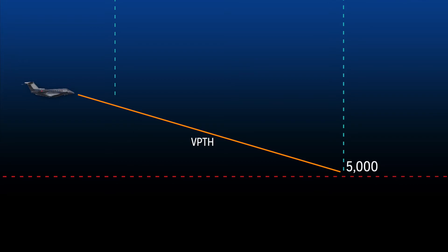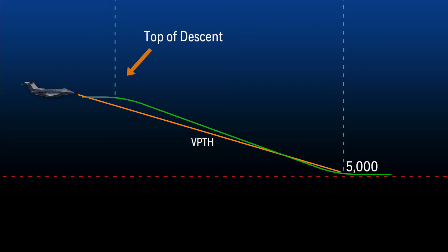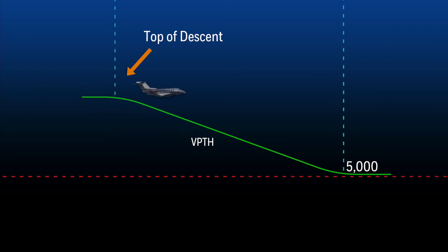The vertical direct-to option creates a path from the current altitude to the selected altitude constraint. Similar to VPATH mode, vertical direct-to can only be used for descents. This function can be used to start an early descent to an altitude constraint before reaching the FMS calculated top of descent point. It can also be used for a late descent when the top of descent calculated by the FMS has already been passed.